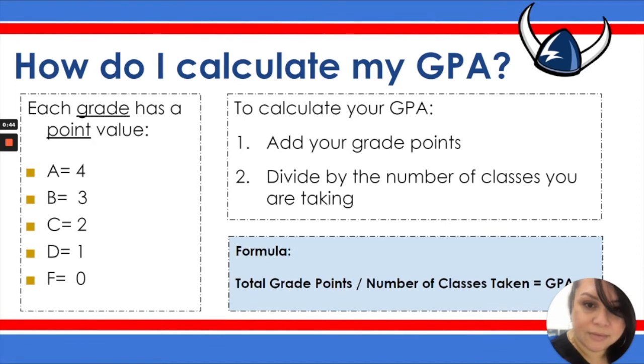How do you calculate a GPA? Each grade has a point value. You can see here that an A is worth 4 points, a B is worth 3 points, consecutively down to F that is worth 0 points.